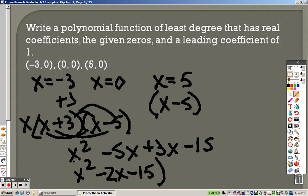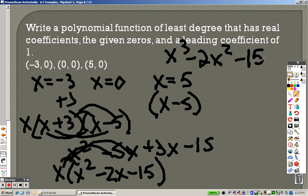However, remember, I still have that x out in front. So now I need to distribute that through to get my final answer, which is x cubed. And when I distribute that through, I get negative 2x squared and I get negative 15x.